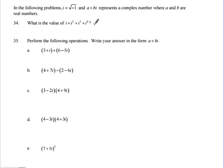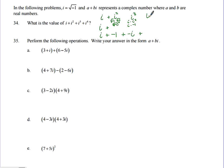We figure out each power individually. i is just i. i squared equals the square root of negative 1 times itself, which equals negative 1. i cubed equals i times i squared, so i times negative 1 equals negative i. i to the fourth equals i squared times i squared, which is negative 1 times negative 1, giving positive 1. Adding them all: i plus negative 1 plus negative i plus 1 equals 0.